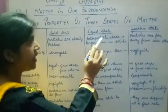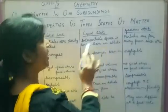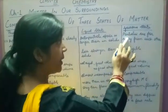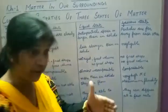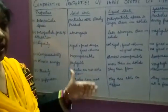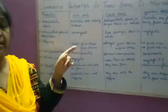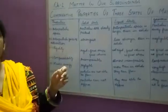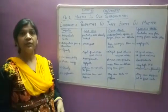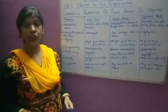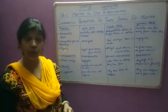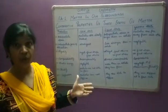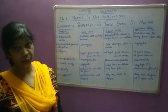In liquid state, inter-particle space is larger than in solids. In gaseous state, particles are far away from each other and therefore inter-particle space is the largest. We can understand this with an example: we can move our hand easily through air, but to do the same thing in a wooden block, we need a sharp tool.